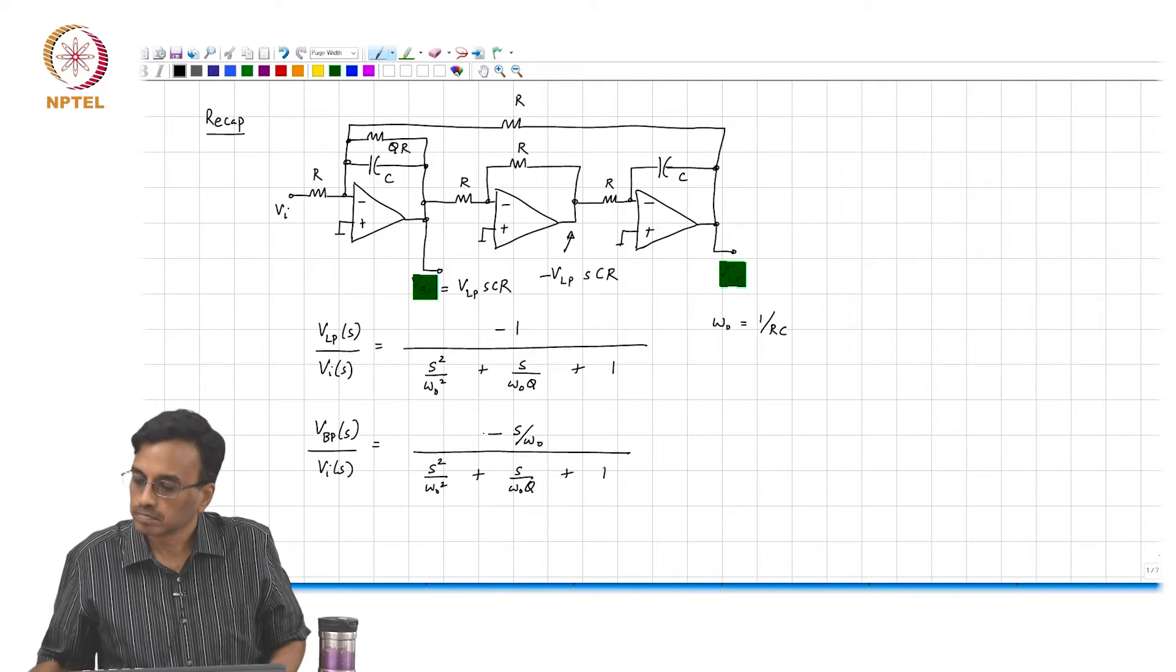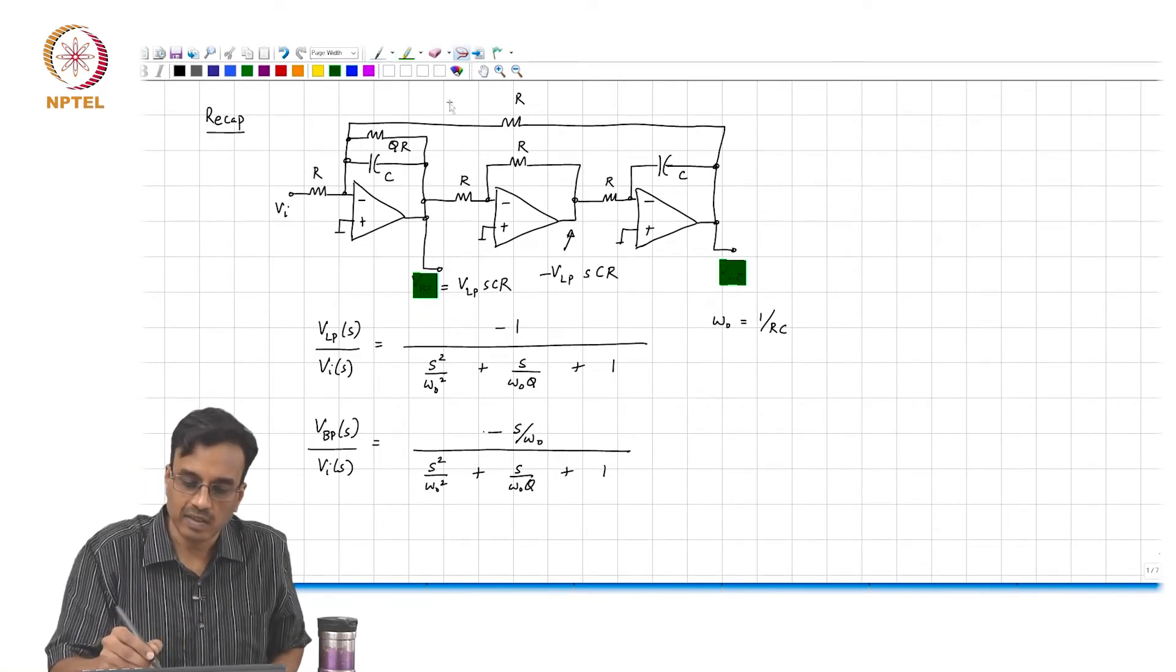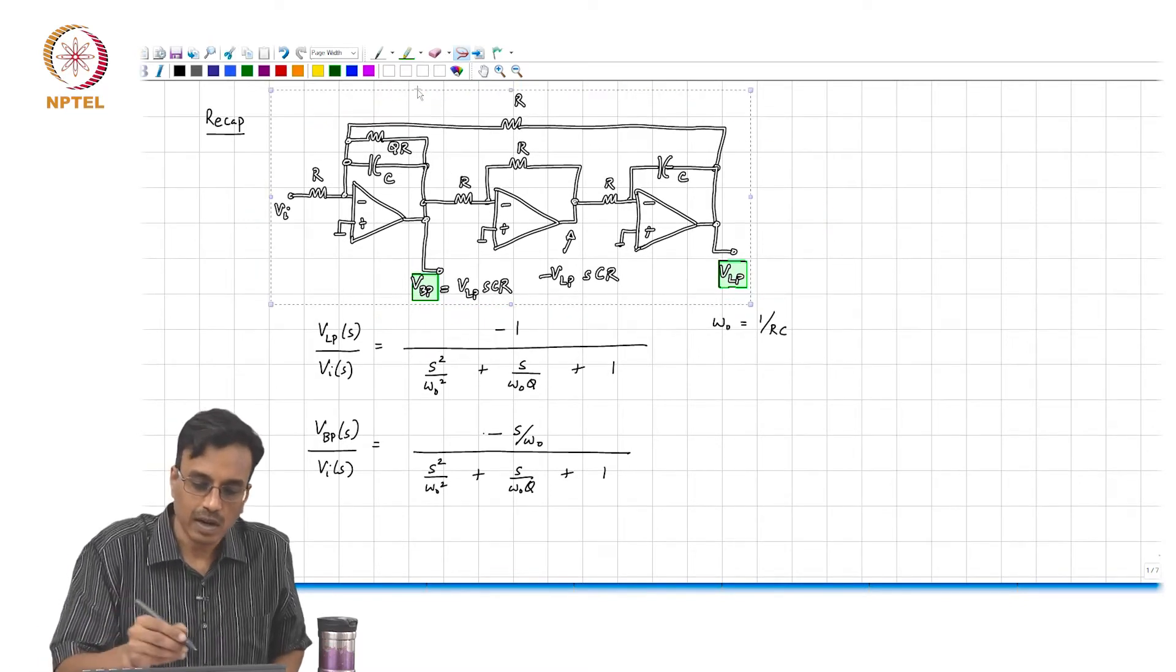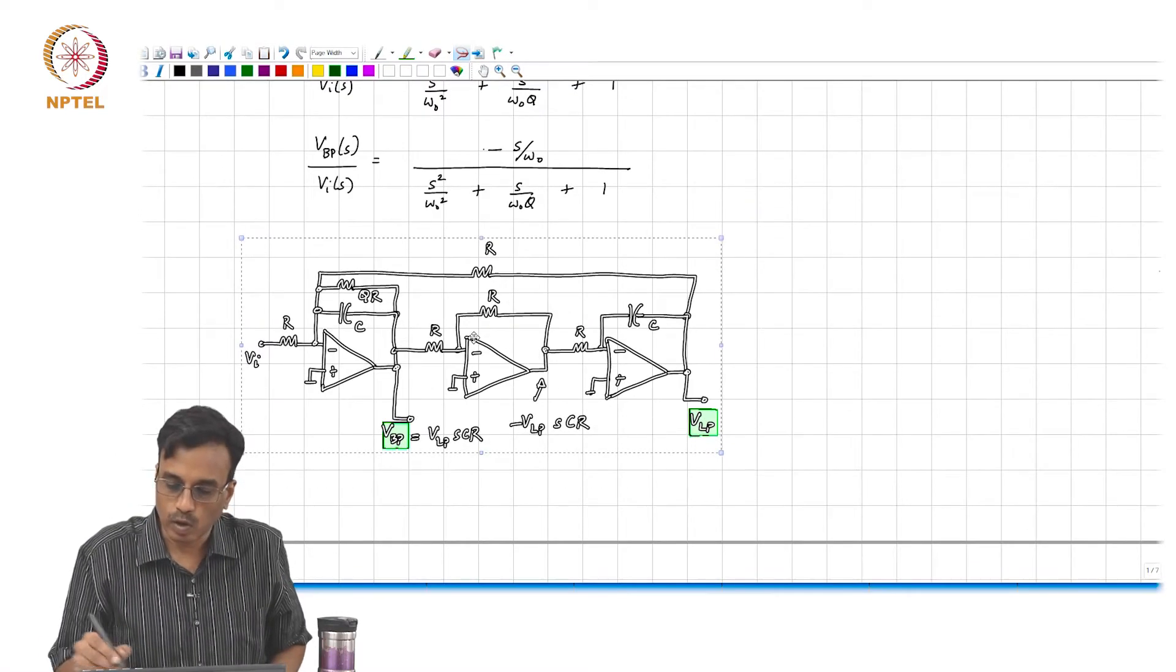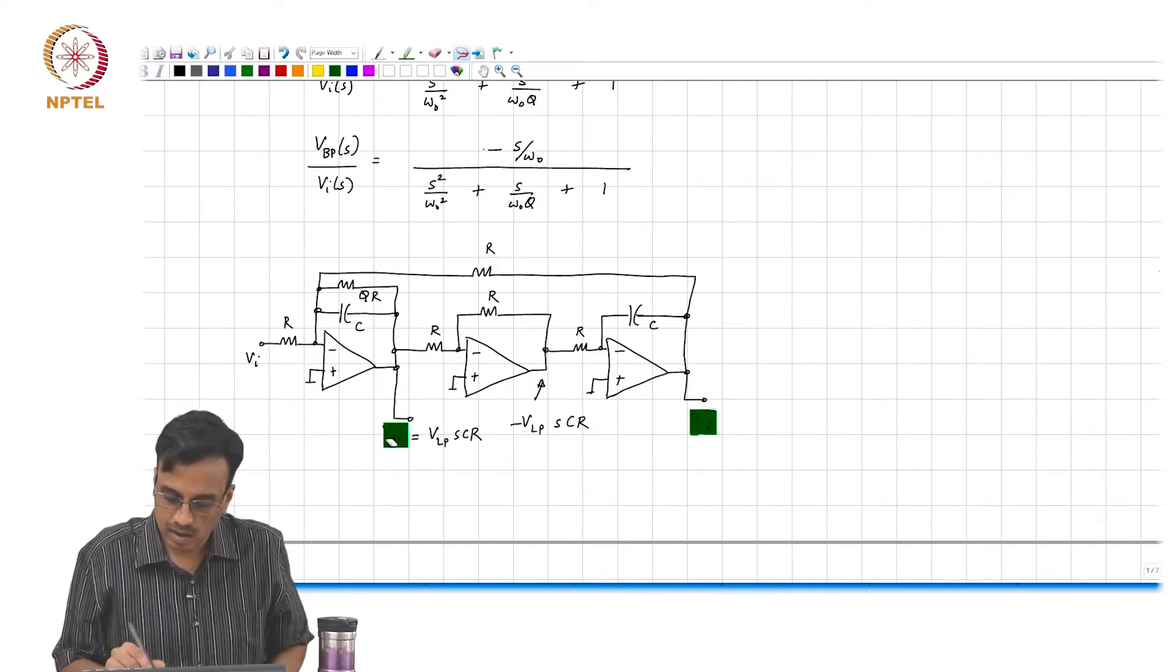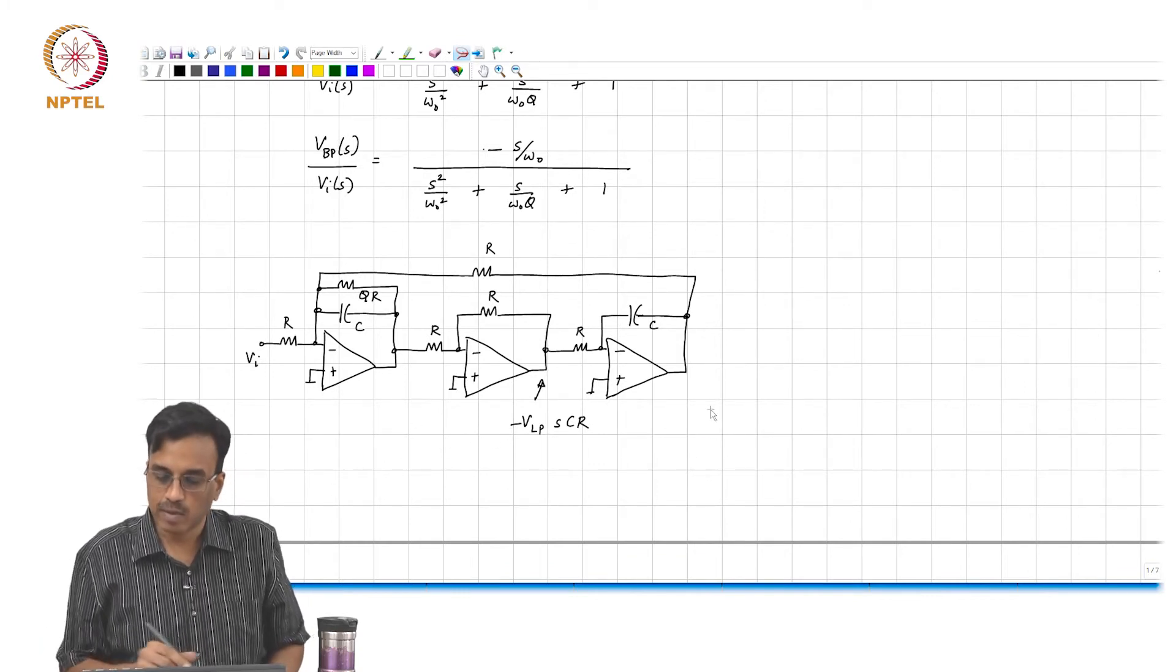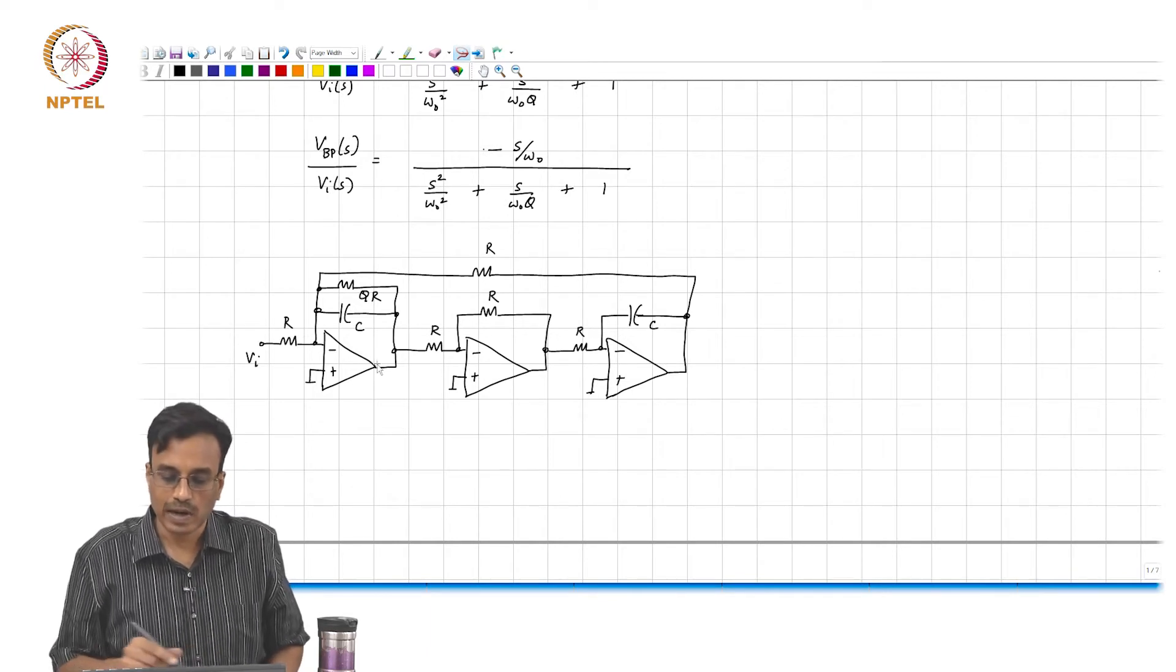And let us now just stare at this circuit and see if there are alternative ways of realizing the same low pass transfer function. This just illustrates the point that one can always use this method of adjoins to come up with alternative circuits, which do not look quite like the original one.